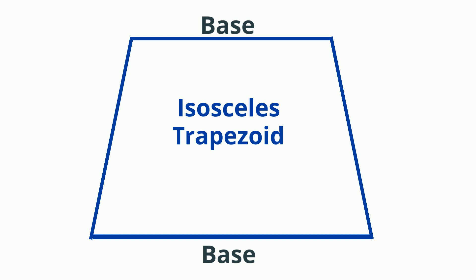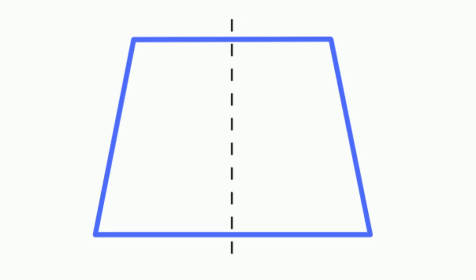The parallel sides are called bases and the non-parallel sides are legs. An isosceles trapezoid has base angles that are equal, which is also called congruent.